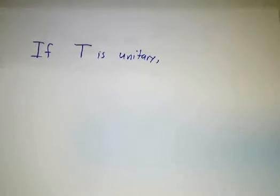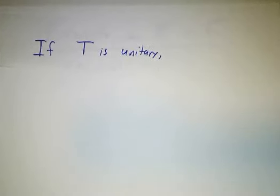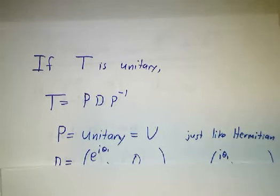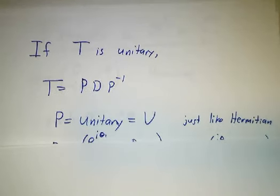Enough of Hermitian matrices for now, let's look at unitary matrices. If you have a unitary matrix, then you diagonalize it as usual, and you say as before, hey look, the eigenvectors are orthogonal, so P is unitary.